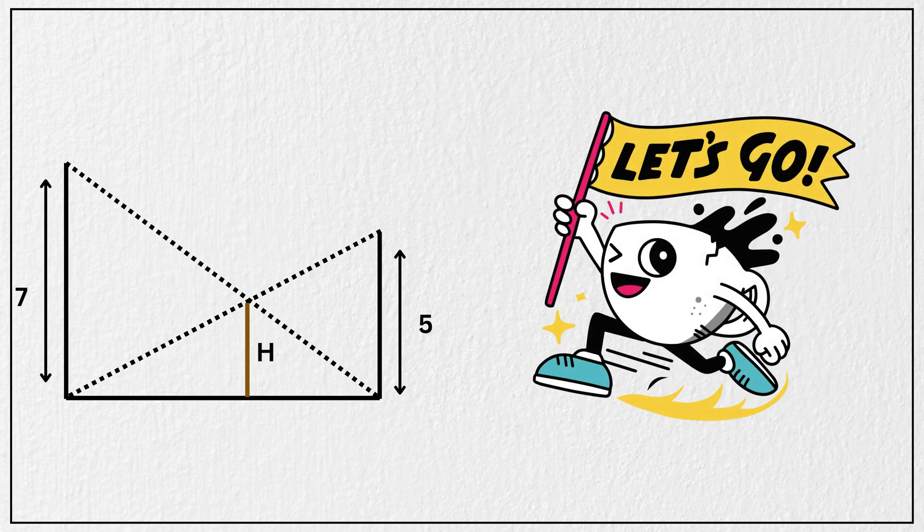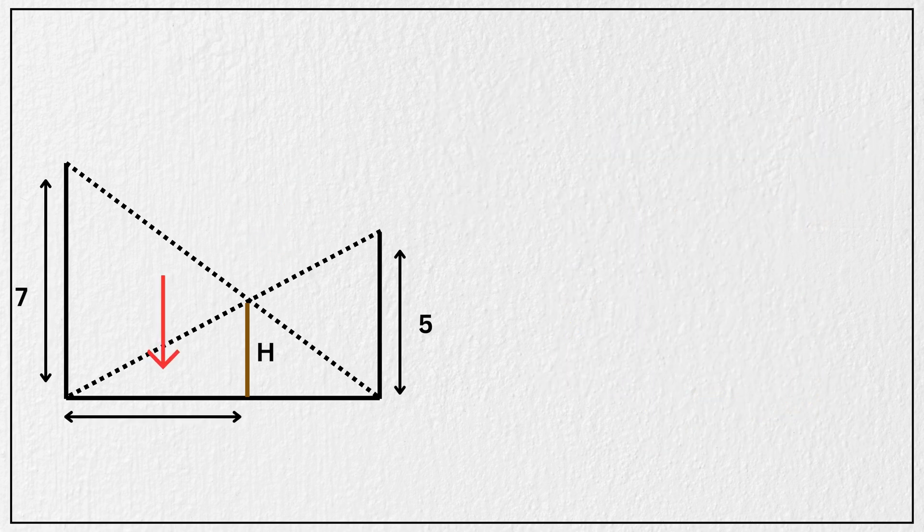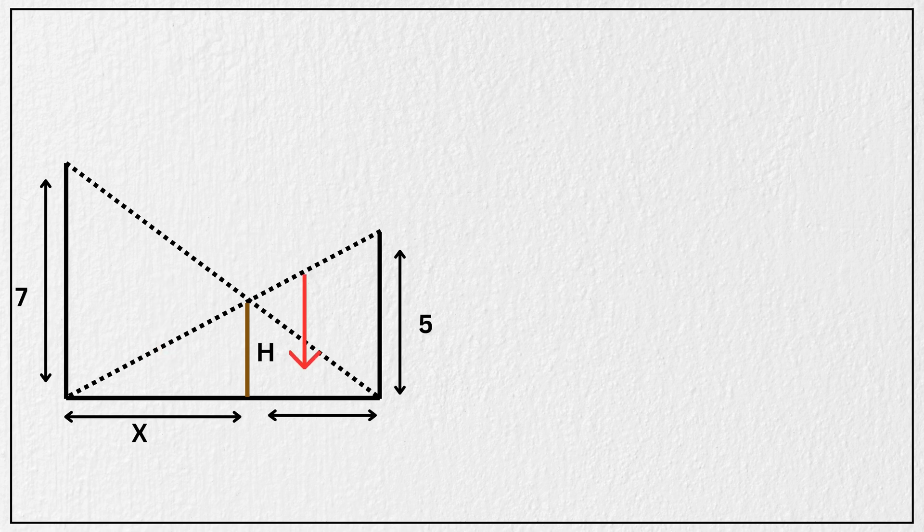Alright, let's start. Let us call this bottom segment on the ground as x, and the remaining segment as y. So the total base from pole to pole is x plus y.